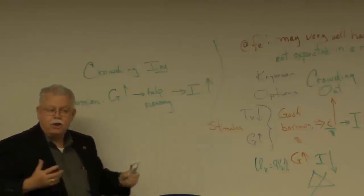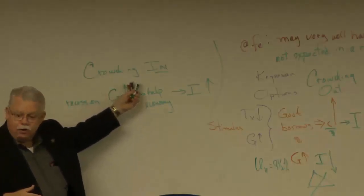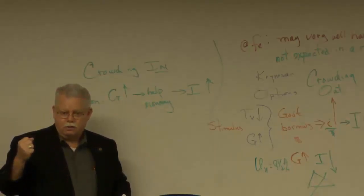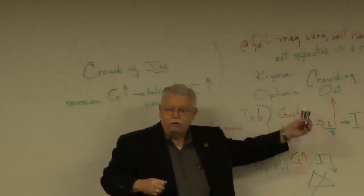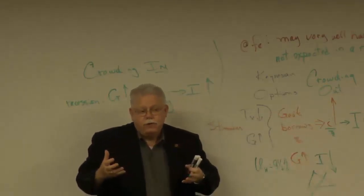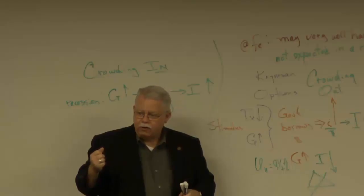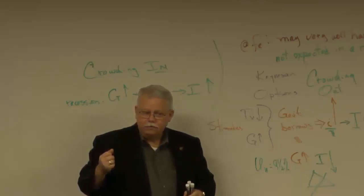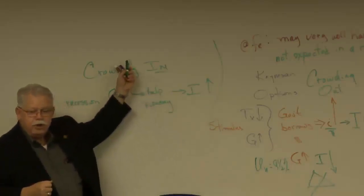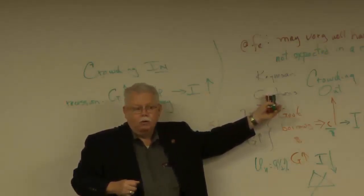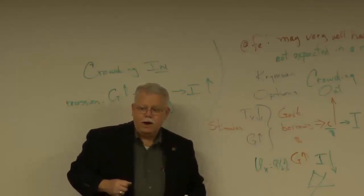So think of it this way. Crowding in, if it occurs, makes stimulatory policy stronger. Crowding out, if it occurs, makes stimulatory policy weaker. You following me on those arguments? Crowding in would make stimulus stronger. Crowding out, if it occurs, makes stimulus weaker. Feel free!